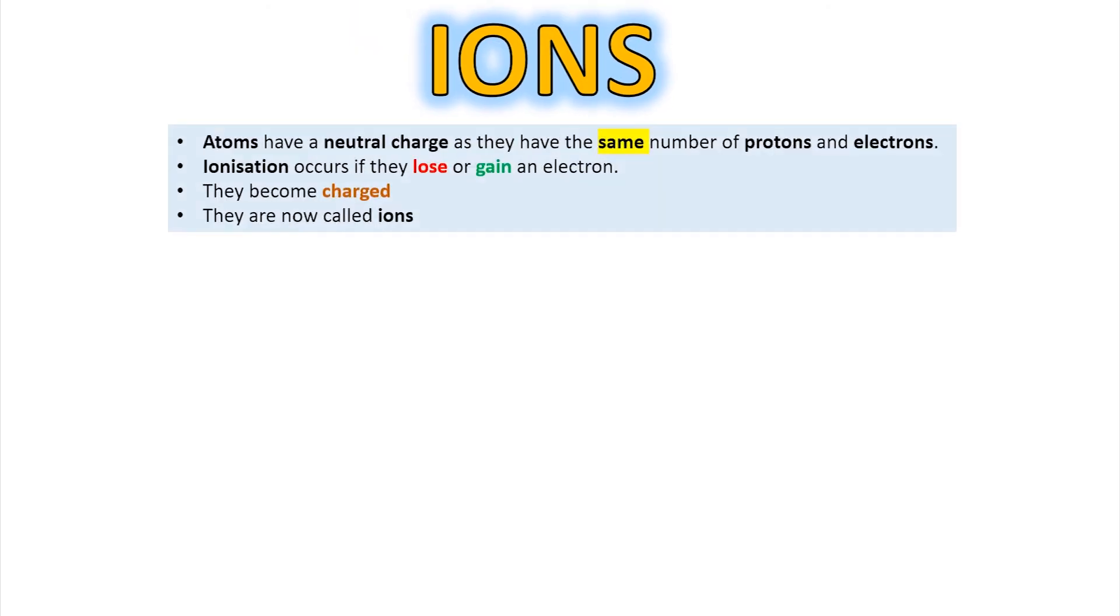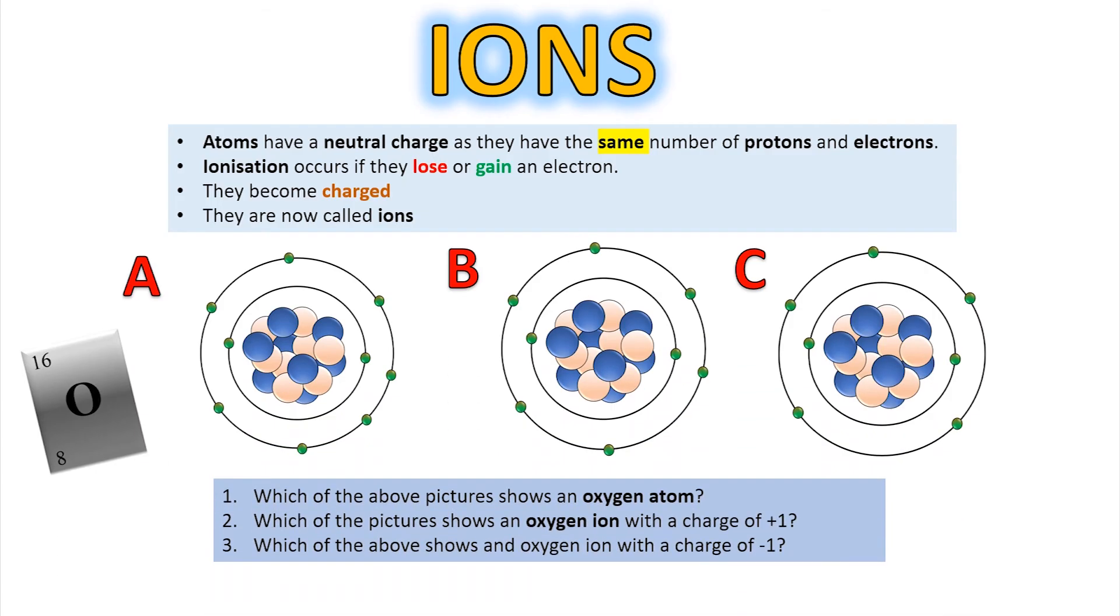In general, ionization occurs if an atom either gains an electron, i.e. it gets a negative charge, or if it loses one. In other words, it has a positive charge. That's when an atom is an ion. An ion is a charged atom.